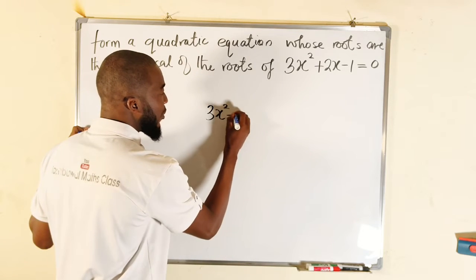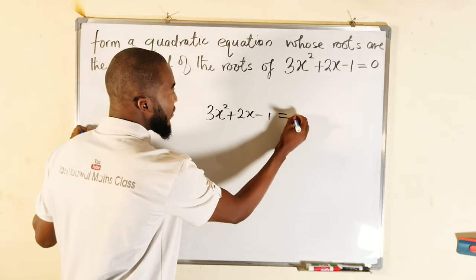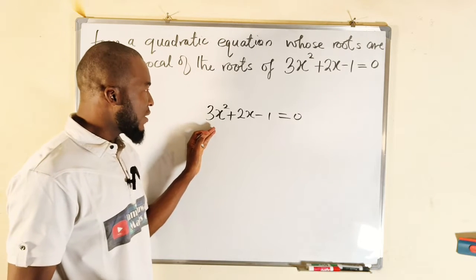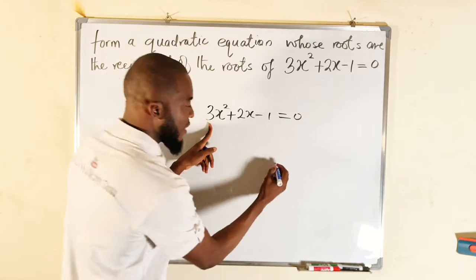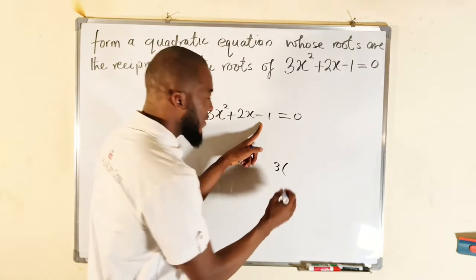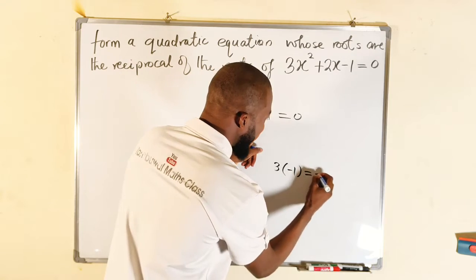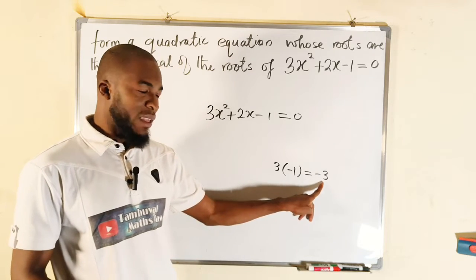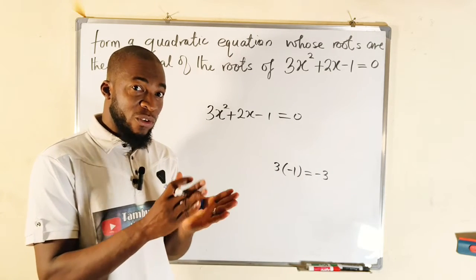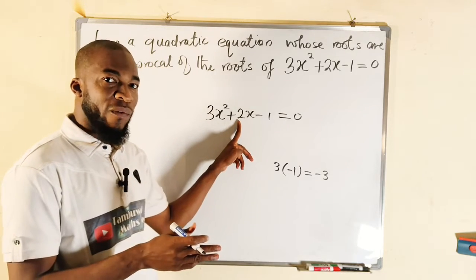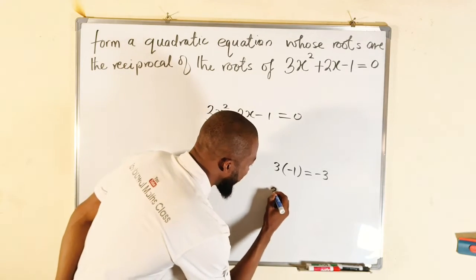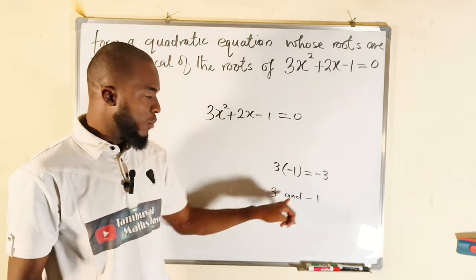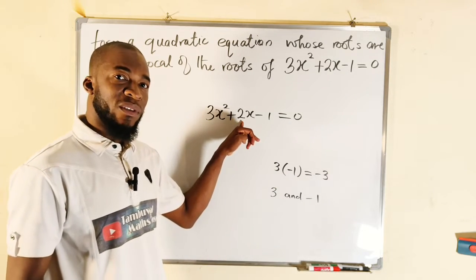We have 3x squared plus 2x minus 1 equal to 0. To solve this problem by factorization, you have to take the leading coefficient which is 3, then multiply that with the constant term which is negative 1. This gives us negative 3. Then you think of two numbers which when multiplied together give negative 3, but when added together give the coefficient of x, which is 2. Those numbers are 3 and negative 1 — multiply them to get negative 3, and add them to get 2.